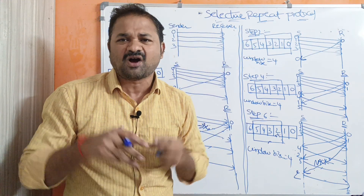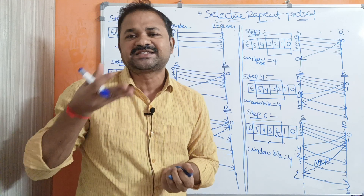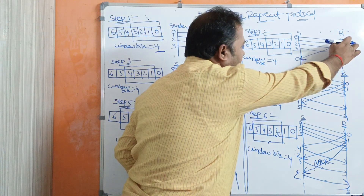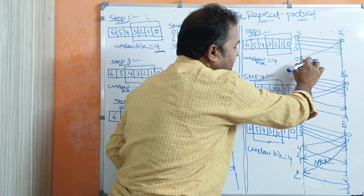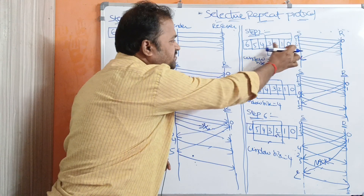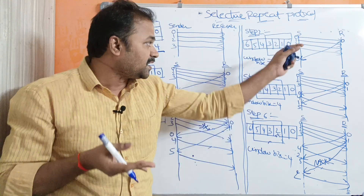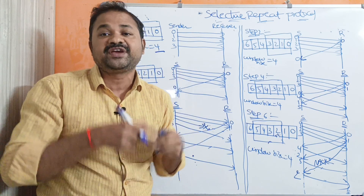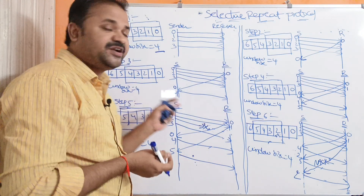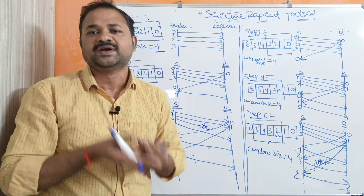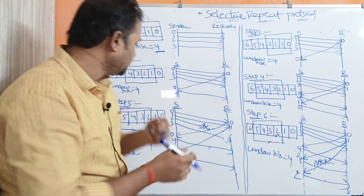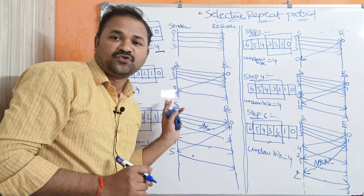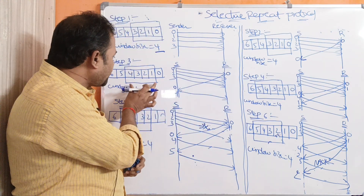In Step 2, after some time, the receiver receives frame 0 and provides acknowledgement 0 to the sender. Since the acknowledgement for frame 0 is received, the sender can advance the window by one position. The window size is 4, but since frame 0 is acknowledged, there is now room for one more frame. So the sender sends the next frame, which is frame 4, and the window is now from frame 1 to frame 4.